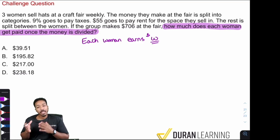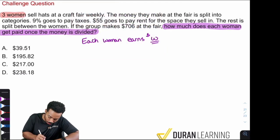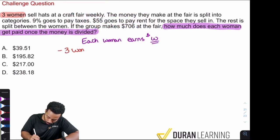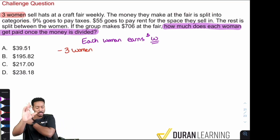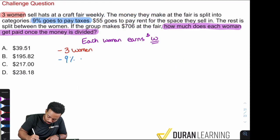We are absolutely fine doing that. And so the next step here is going to be, let's go back and let's find all this information and let's just write it on down. We're going to see all of the information we have. And we're going to ask ourselves, how can we use this information to figure out the earnings for each woman? That's all we care about right now. And so let's dive on in. We see that we have three women and they sell hats at a craft fair weekly. So we see that we have three women. Again, I'm just writing my information down. Next, the money they make at the fair is split into categories. That just gives me context. Next, 9% goes to pay taxes.